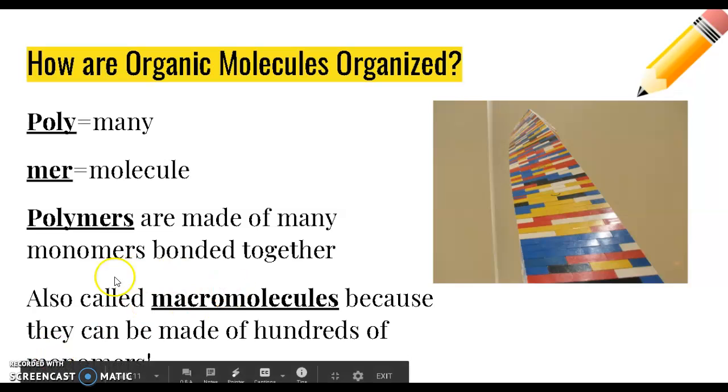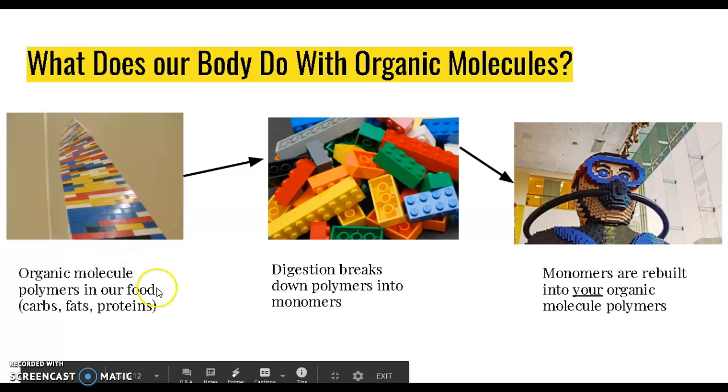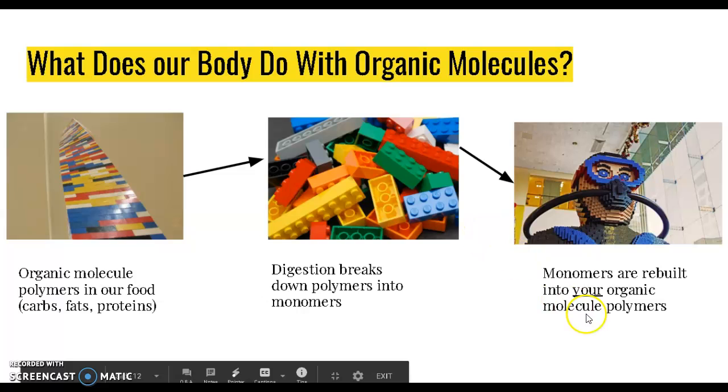What does our body do with organic molecules? Organic molecules are found in our food: carbs, carbohydrates, fats, and proteins. These are big polymer molecules made of many of these smaller building blocks. Our digestive system breaks down the polymers into many monomers. You can imagine knocking down this giant Lego tower so it breaks apart into all the individual Lego building blocks. Then your body takes these monomers and uses some of them for energy, but the rest are rebuilt in new ways to form your organic molecule polymers to build your body.